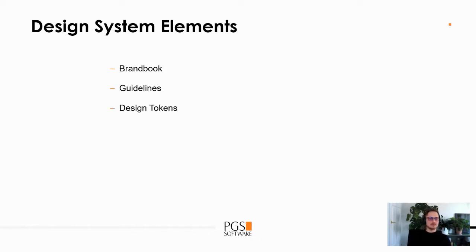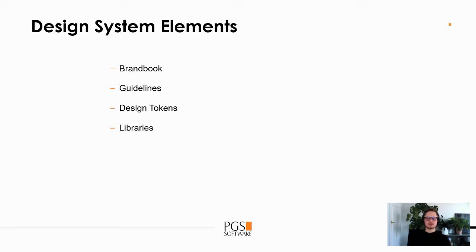Another design system element is design tokens — basically so-called design decisions which can be exported to different environments and different development formats. Next we have libraries, and I mean all kinds of libraries: design kits like Figma UI libraries for designers, and component libraries for different frameworks for developers. It's essentially a set of reusable items, either assets or components. For example, we can also have a library of design tokens.